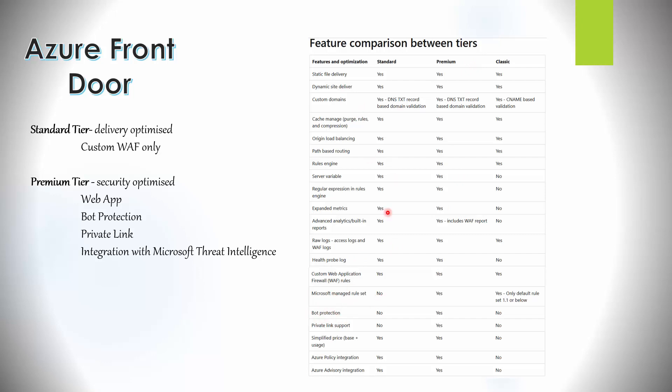You can see the feature comparison clearly — Standard does not support Microsoft-managed rule sets, only custom rules you create yourself, and it does not support bot protection or private link. With private link support in the Premium tier, Azure Front Door can send traffic to an origin over a private endpoint in your virtual network rather than a public endpoint. Traffic between the VNet and the service goes over the Microsoft backbone network, with no exposure over the internet. Note: if you want to switch between tiers, you would have to recreate the Azure Front Door profile, so pick the right one the first time.